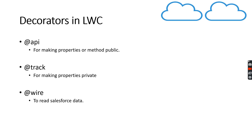Second is @track. The @track decorator is basically used to make properties or a method private in lightning web components. This property is not accessible outside of the lightning web component in which it is declared.